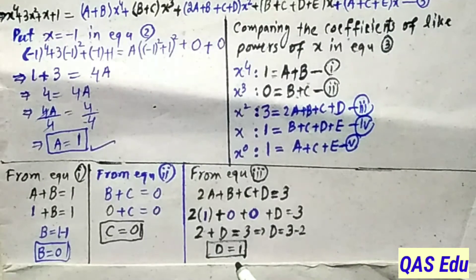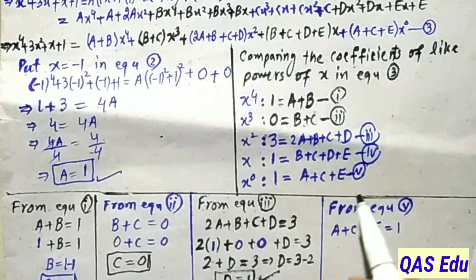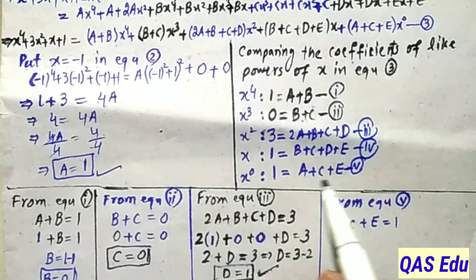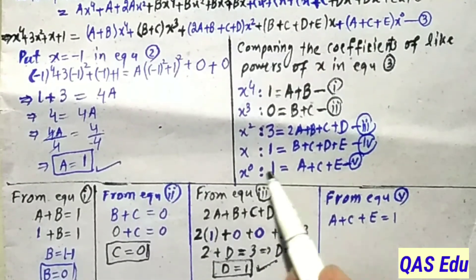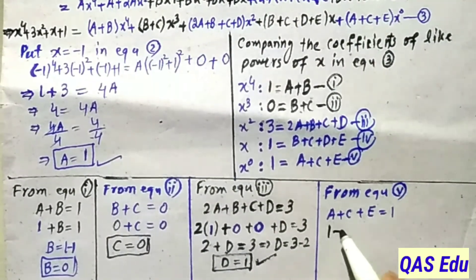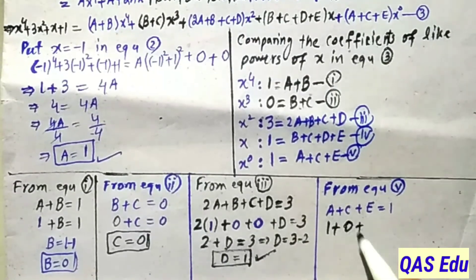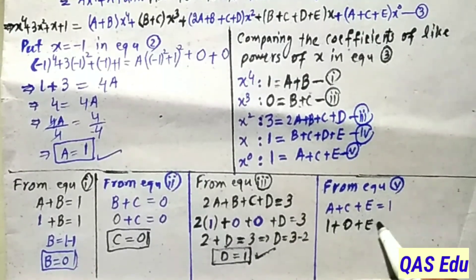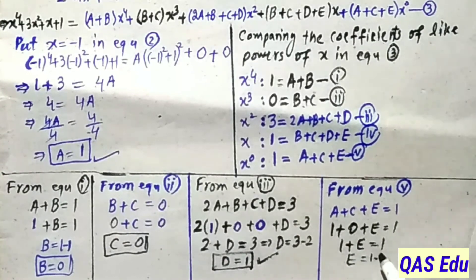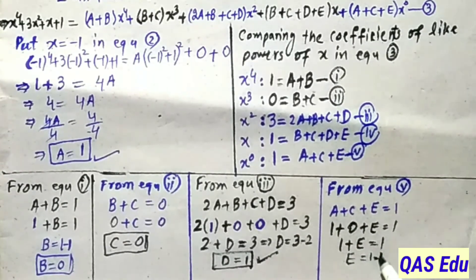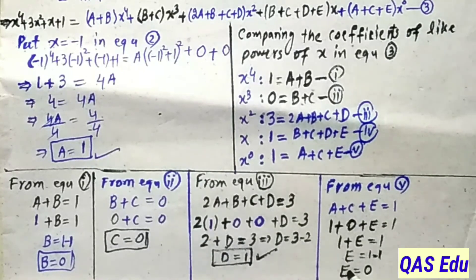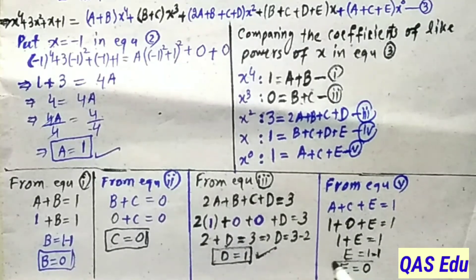From equation number 5: A + C + E = 1. Substituting A = 1, C = 0: 1 + 0 + E = 1, so E = 1 - 1 = 0. Therefore E = 0.